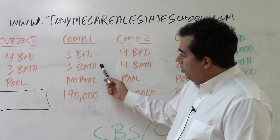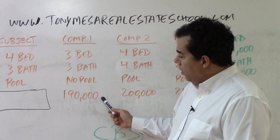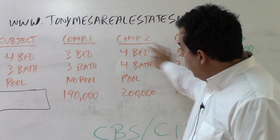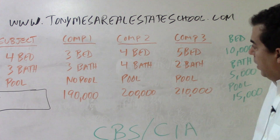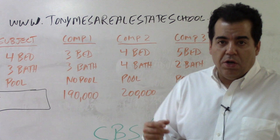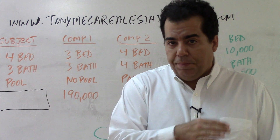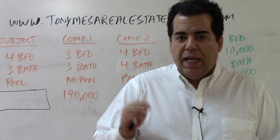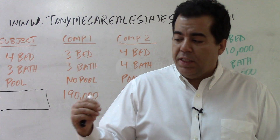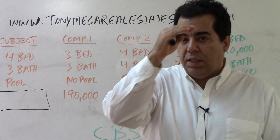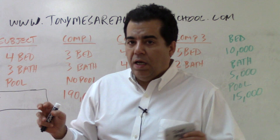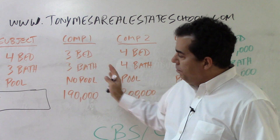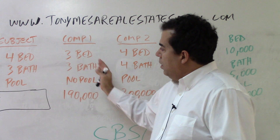Comparable number one is a three-bedroom, three-bathroom, no pool, sold for $190,000. I've already put this into an adjustment grid. On the state exam, the problem will be given to you as a paragraph, and you'll need to use your scratch paper to create a grid with the subject and then comp one, comp two, and comp three beside it, making adjustments to each comparable.